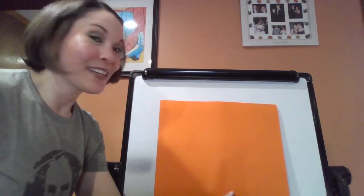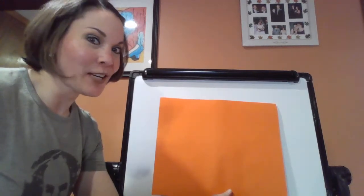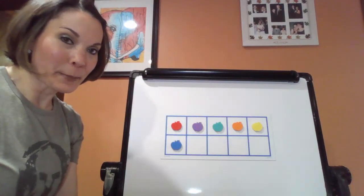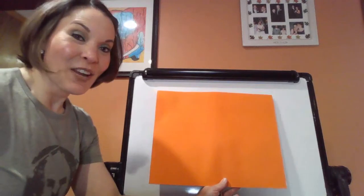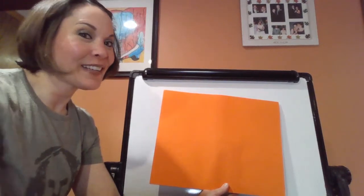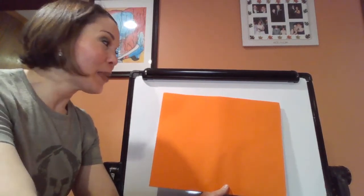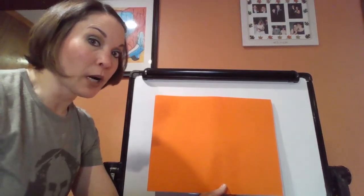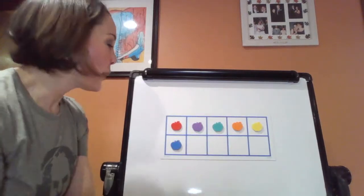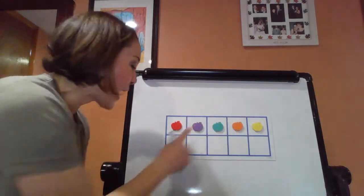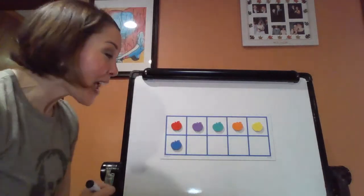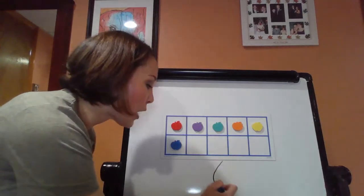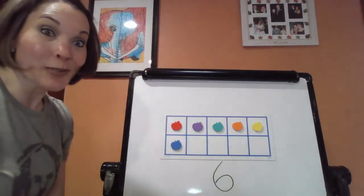Here we go, boys and girls. Get ready, get set, hope you guys are watching. [brief reveal] Time to cover it back up. I hope your eyes were watching, I hope they were counting. I hope you said the number six — here it is, one, two, three, four, five, six. Get ready to write our number six. We say a loop and a hoop — our hoop is on the bottom. There we go, folks, here's our number six.